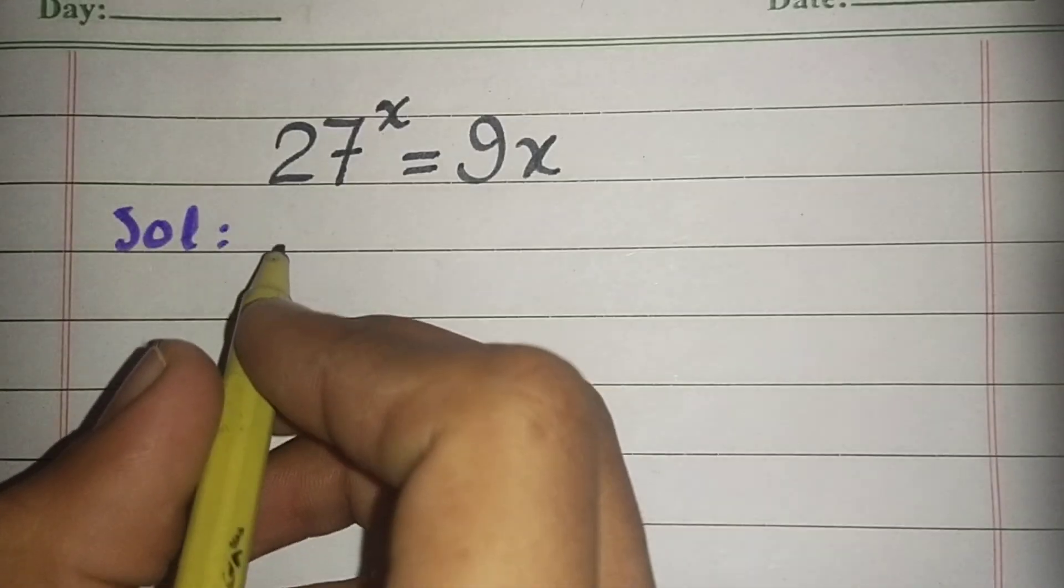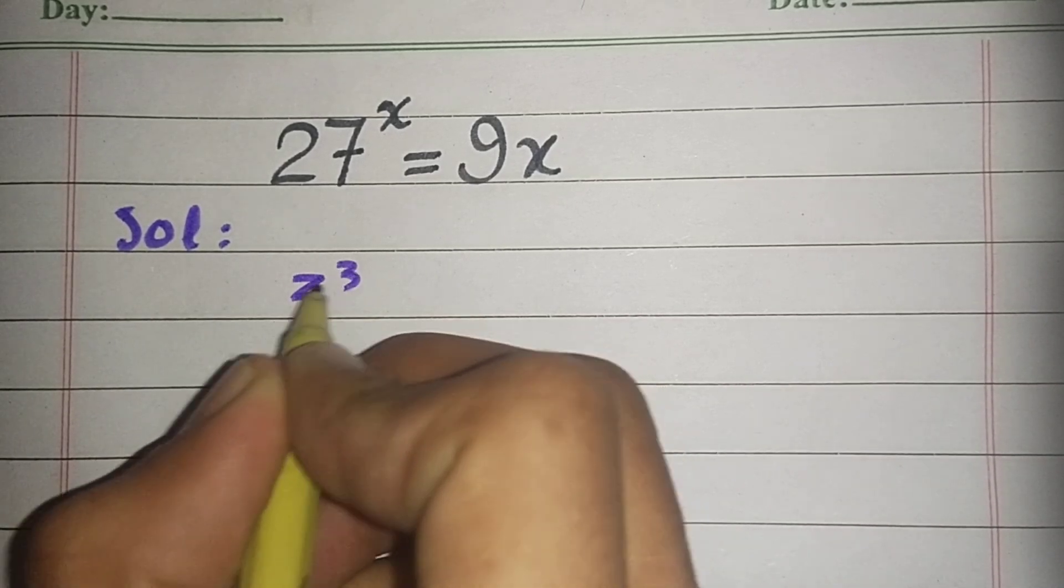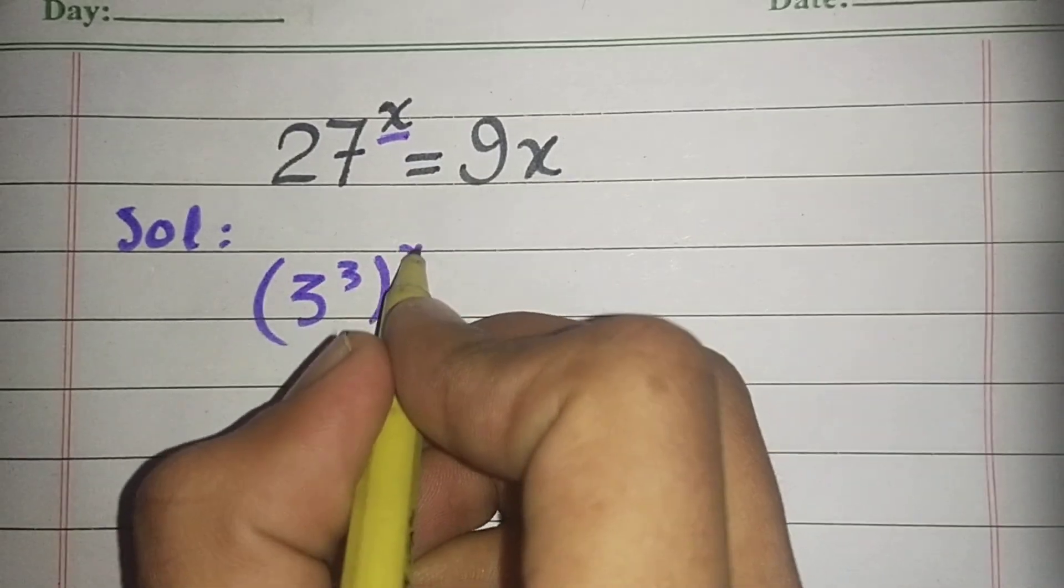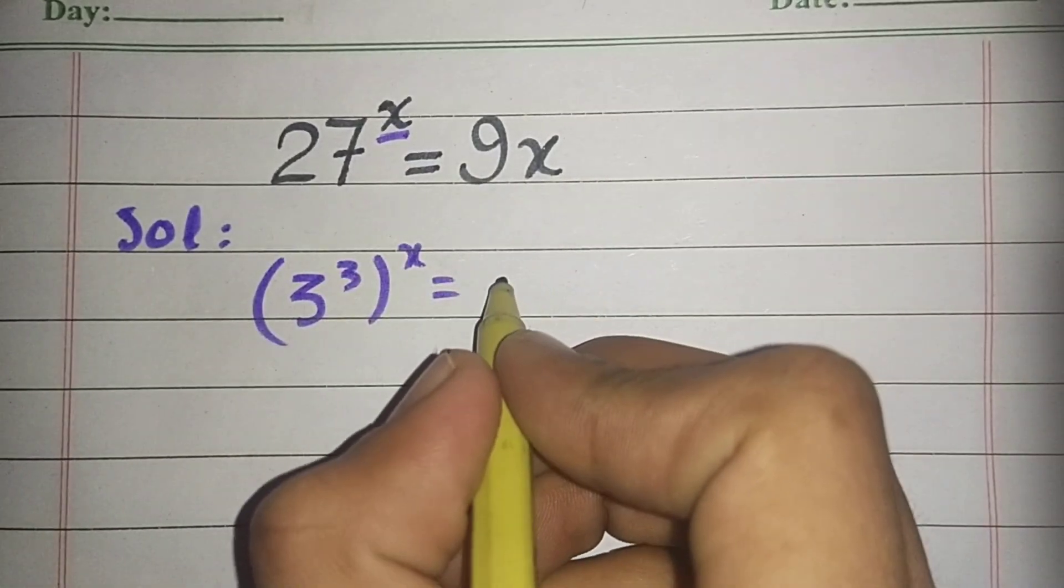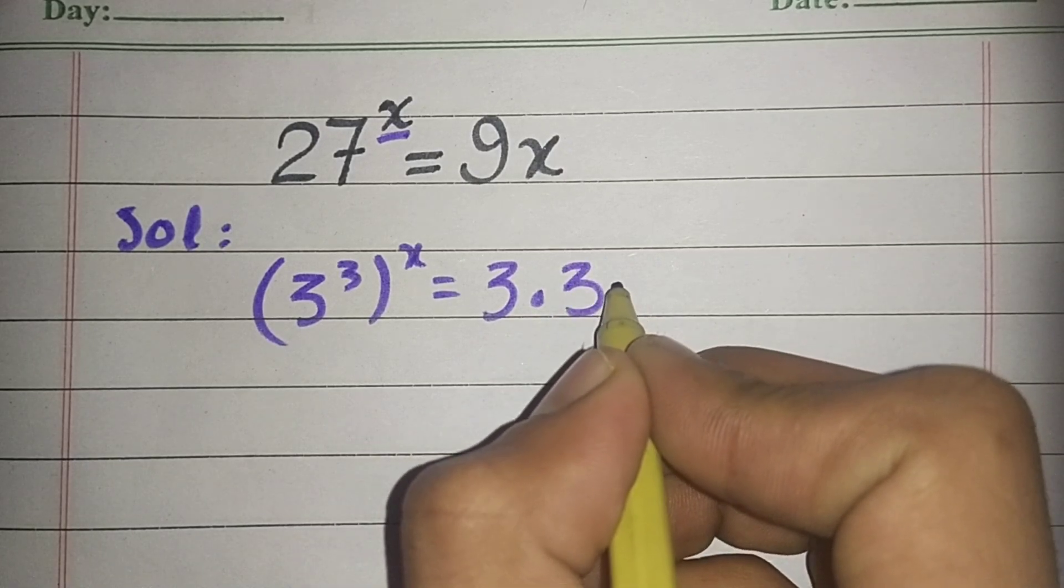Let's go to the solution. We can write 27 as 3 power 3, and 9 can be written as 3 times 3 times x.